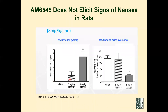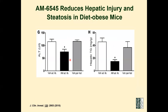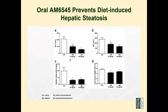AM6545 also reduces signs of hepatic steatosis — fat in the liver — because the liver has a lot of CB1 receptors. In unhealthy conditions, CB1 overexpression can produce a lot of fat and fibrosis. Our compound reduces fat and fibrosis, and also prevents diet-induced hepatic steatosis in a dose-dependent manner.